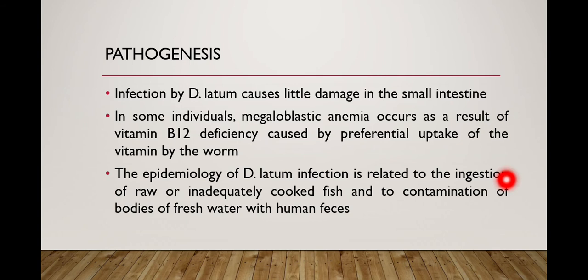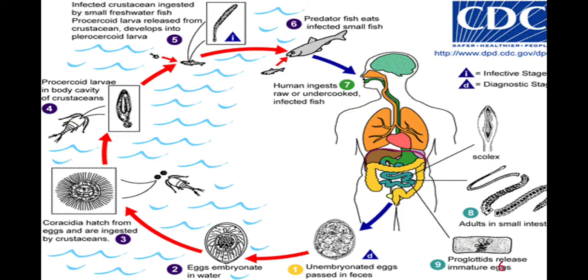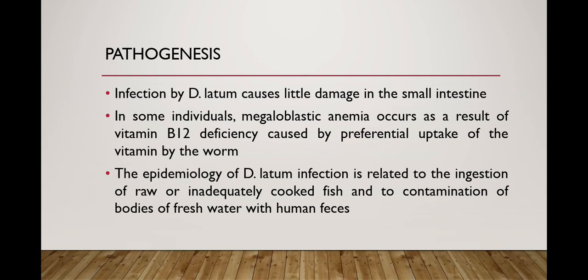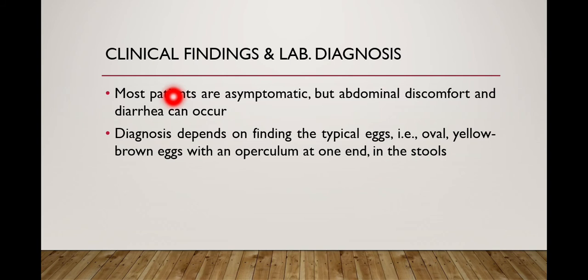The epidemiology or prevalence of D. latum infection is related to the ingestion of raw or inadequately cooked fish. This means the infection is usually prevalent in areas where people consume raw or undercooked fish meat, or where there is contamination of bodies of fresh water with human feces. If human feces reach fresh water, the eggs of D. latum can become embryonated. Therefore, prevalence is always related to these two factors: ingestion of raw or undercooked fish, and contamination of fresh water bodies with human feces.